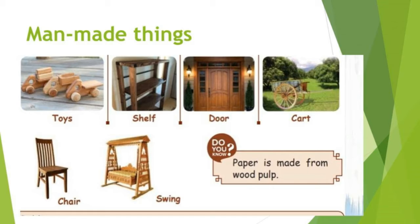Do you know, children? Paper is made from wood pulp. So the natural source is a tree, from which man makes material (wood pulp), and from that, man makes things like paper.